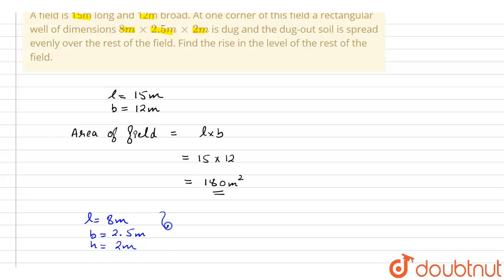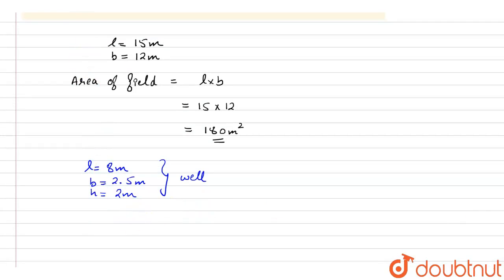meters. These are the dimensions of the well. Now we will find the volume of this particular well. So to find out the volume of the well, we have the formula: volume is equal to length into breadth into height, because we need to know how much mud was taken out. So volume is equal to l into b into h, that is 8 into 2.5 into 2, that comes out 40 meter cube.